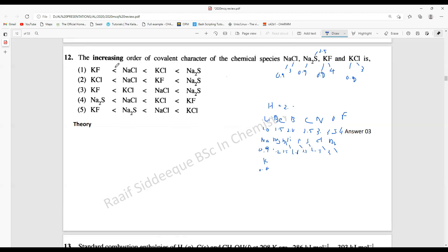They're asking for increasing order of covalent character, which means decreasing electronegativity difference. Out of these structures, KF will have the maximum electronegativity difference, so KF will have the minimum covalent nature. I see two or three answers with this. The maximum covalent character is with minimum electronegativity difference. Na2S would have the highest covalent nature, so only these two options remain.